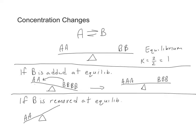What if instead of adding B, we removed B? Then there would be too much reactant, and the system would be out of balance. The system would eventually reachieve balance by using some of the reactant to create some product. When A is converted to B, we can get the system back to equilibrium. We have a different number of A and B than we originally had, but we still achieve the equilibrium constant value of 1.